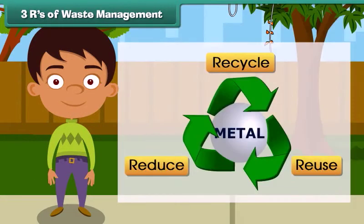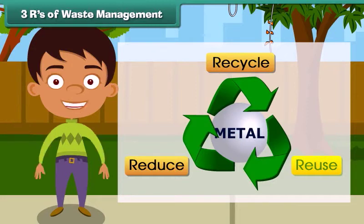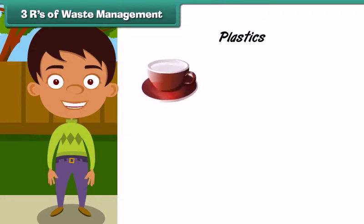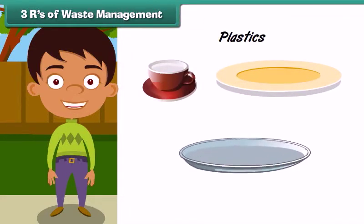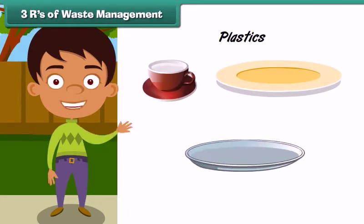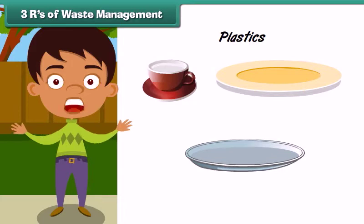The second R stands for reuse. Reuse means to use an item more than once. Plastic cups, plates, and utensils are usually disposed of after a single use. Instead, we must reuse them after washing.